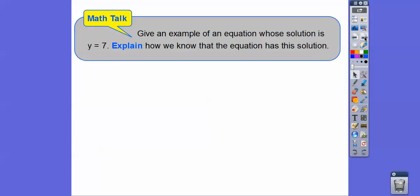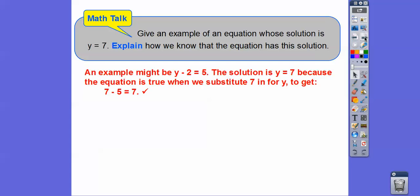So give an example of an equation whose solution is y equals 7. So there's infinitely many equations, you guys, and we'll just choose a simple one here. Explain how we know the equation has this solution. So here's an example, and this is one of infinitely many. y minus 2 equals 5.